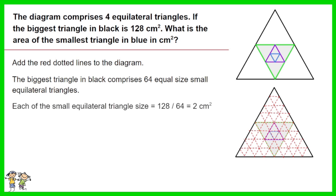Each of the small equilateral triangle size equals 128 divided by 64 equals 2 cm squared. As such, the area of the smallest triangle in blue is 2 cm squared.